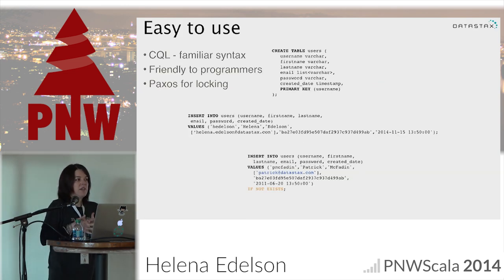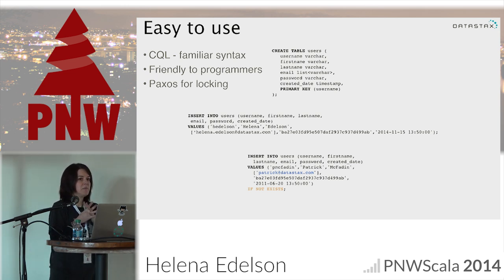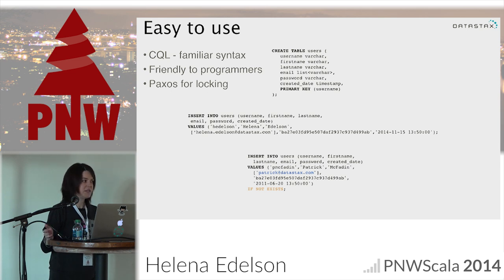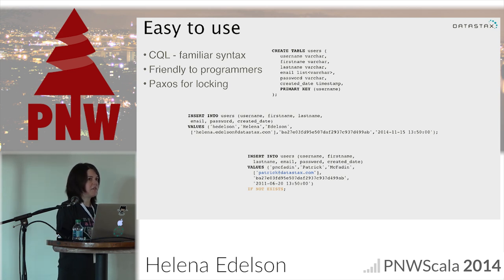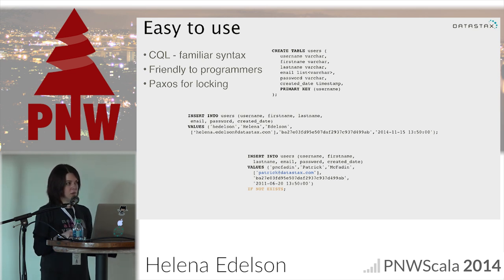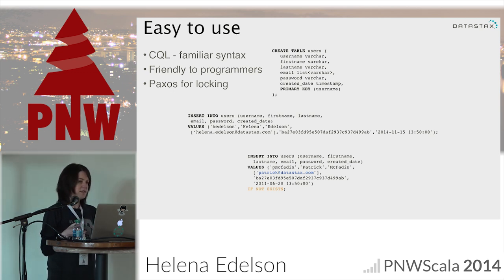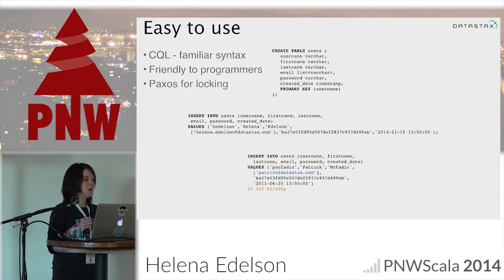Cassandra is very easy to use. When I had worked with Cassandra before coming to DataStax, I wasn't quite aware of how easy it was once CQL came out. I started working with it using the Netflix API, which used the Thrift protocol — it was very awkward, written in Java, with threading issues and a lot of blocking. Working in a Scala application built in Akka with a blocking Java API is a nightmare.